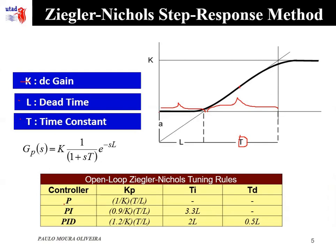After extracting the three model constants, Ziegler-Nichols proposed tuning rules using K, L, and T. Depending on the controller type — P, PI, or PID — we get a set of rules that are functions of K, T, and L, and the gains for the controller can be evaluated using these tuning rules.